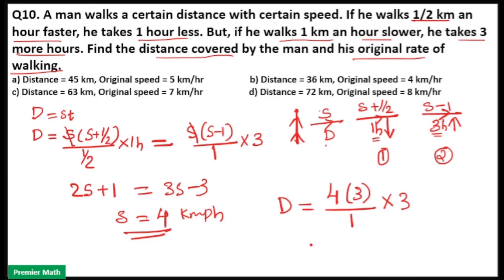So this will become 4 into 9, 36 kilometer. So distance is 36 kilometer and speed is 4 kilometer per hour. So option B is your answer.